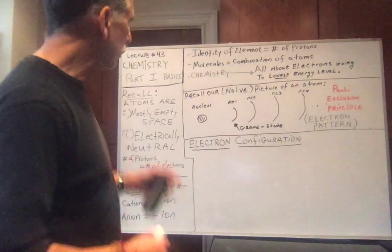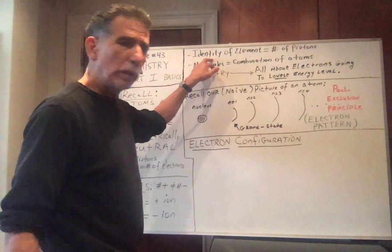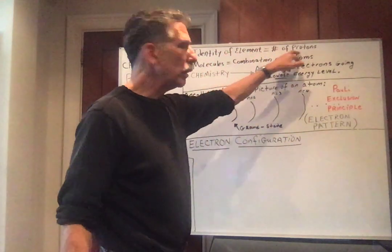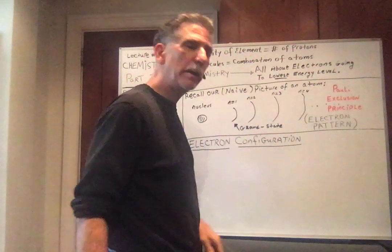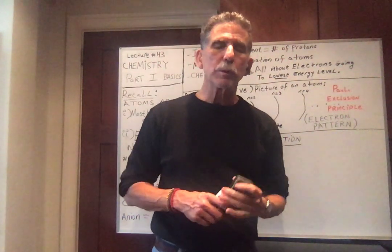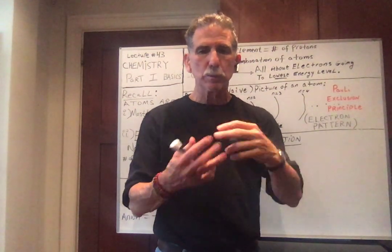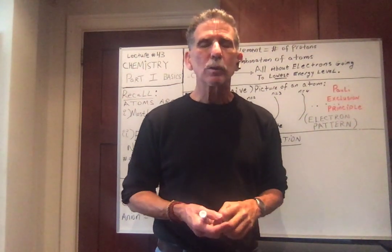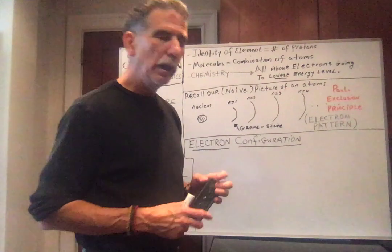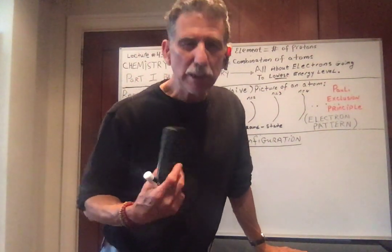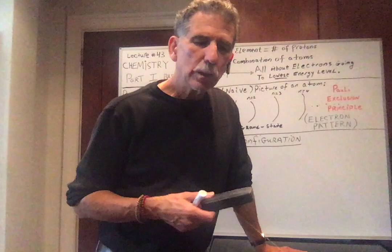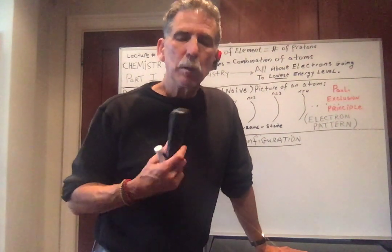Just a review: from nuclear physics, we should remember that the identity of an element is determined by the number of protons. You could have the same number of protons but a different number of neutrons - that's called an isotope. Write that down: isotopes have the same chemical properties.